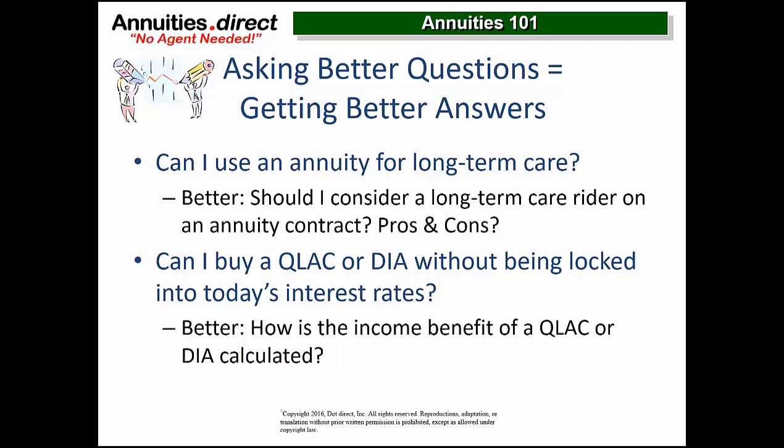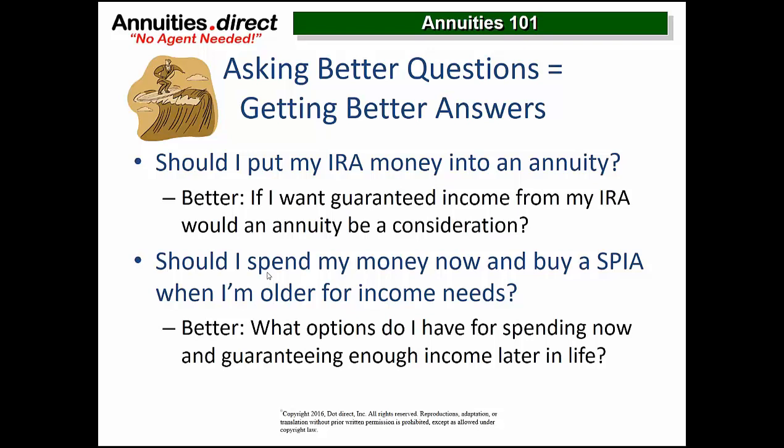Should I use an annuity in an IRA or a non-IRA? Guarantees are guarantees — it really just comes down to the taxation of the income stream coming out. The guarantees don't change inside or outside of an IRA. Another question: should I spend my money now or buy a SPIA when I'm older? If you're comfortable with markets, go for it. At the time you want to transfer risk for income, then go buy a SPIA. You can do that in ladders — ladder the purchase over time based on your risk tolerance.